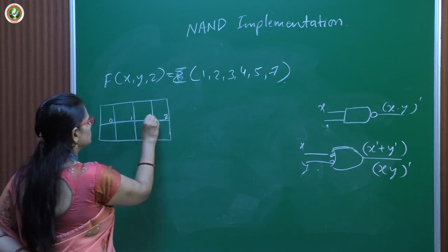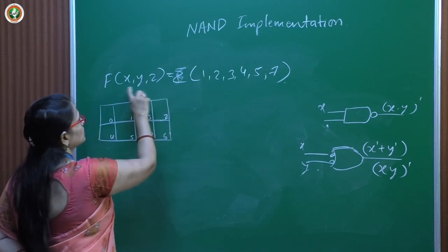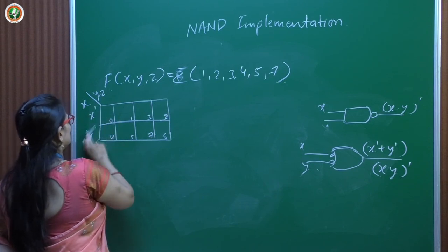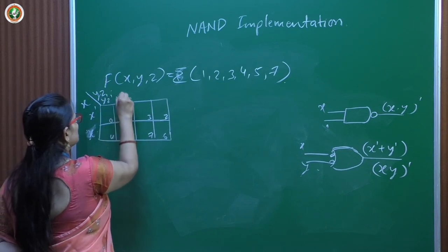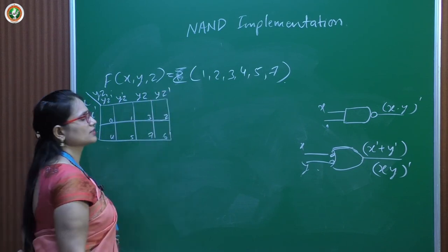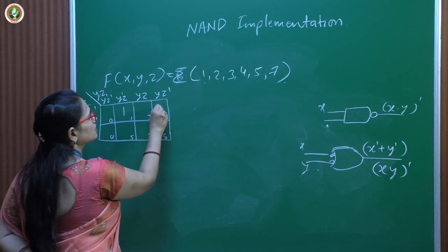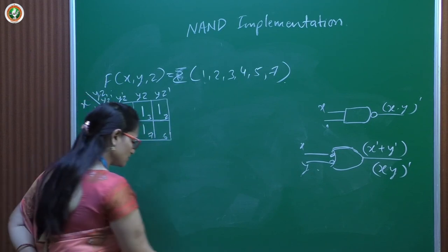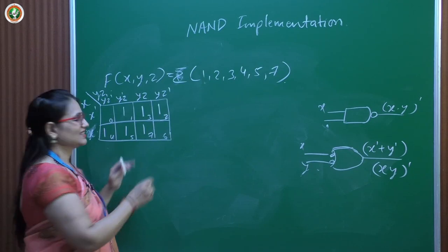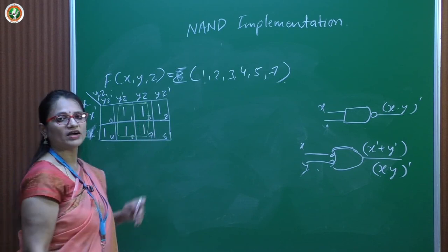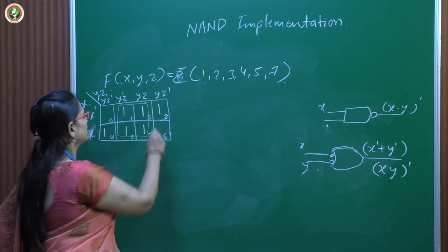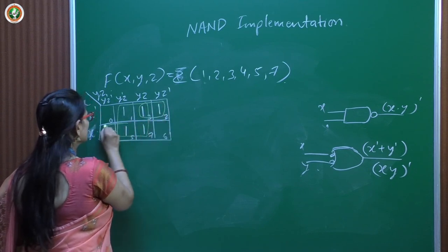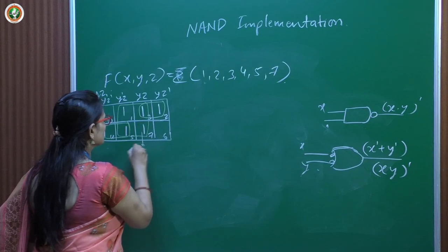Setting up the 3-variable K-map with cells 0 through 7, with variables x, x'; y'z', y'z, yz, yz'. We mark the minterms 1, 2, 3, 4, 5, 7 with ones. We can form a quad by joining four ones together, and a pair with two remaining ones.